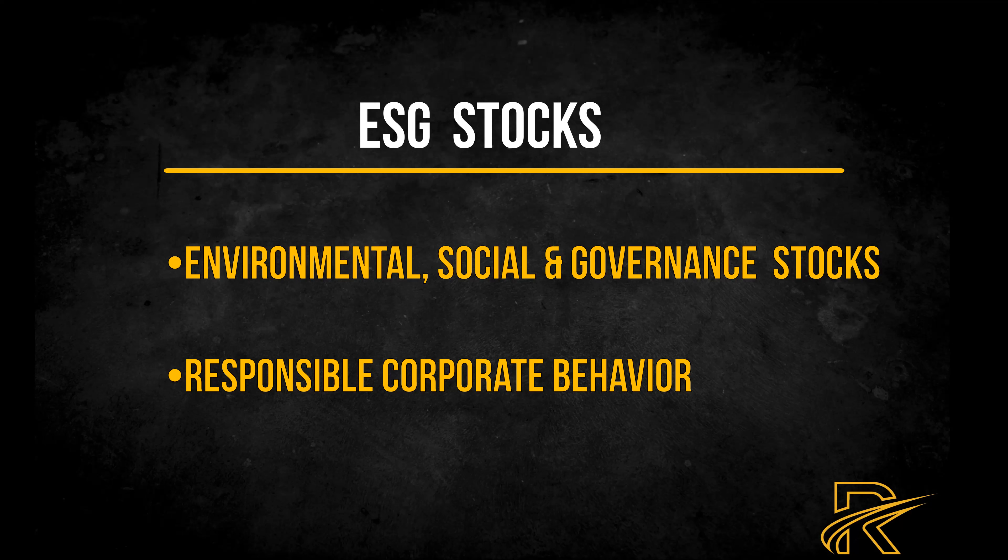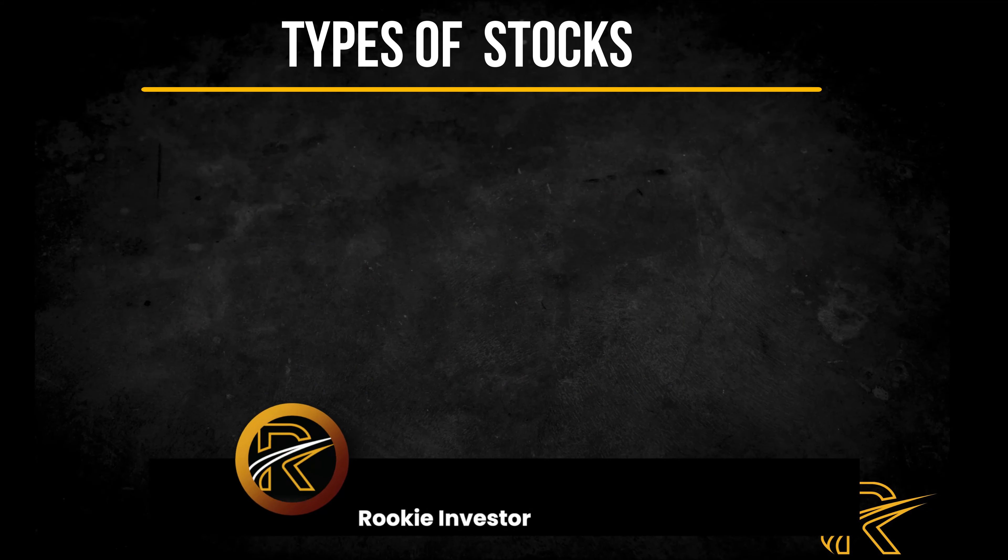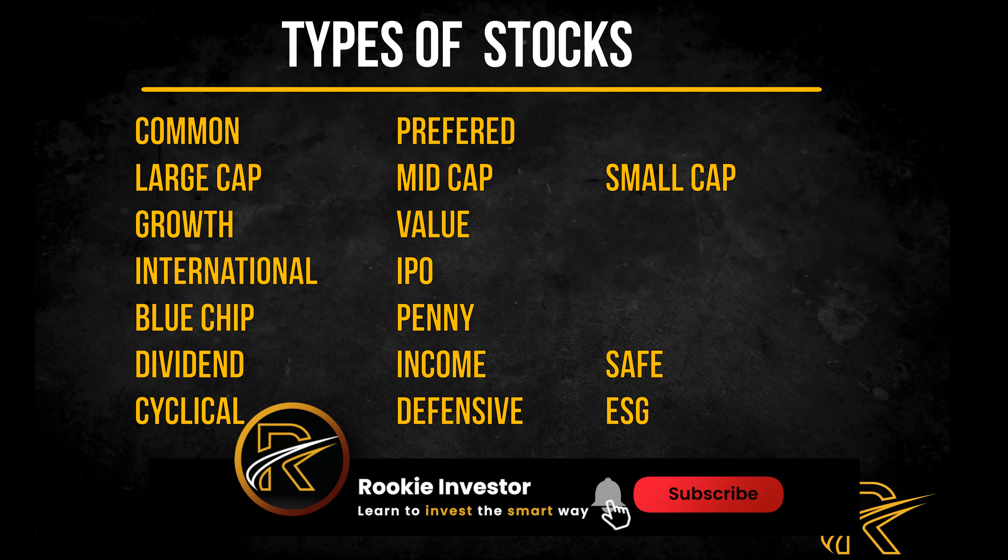Defensive stocks' revenue and potentially their stock prices remain steady in both boom and bust economies. Some investors buy cyclical stocks when they believe the economy is poised for growth and move to defensive stocks when they anticipate a contraction. This strategy is known as sector rotation, but it can be risky because no one can predict the economy's next move with 100% accuracy.